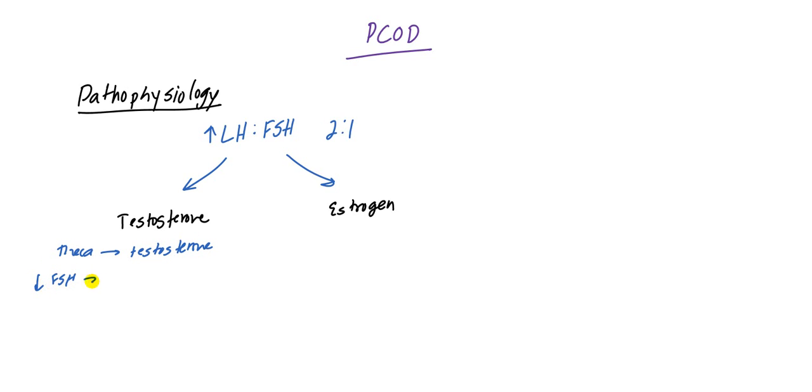Usually the granulosa cells will convert the testosterone into estrogen, but granulosa cells are activated by FSH. So if you have low FSH you're going to have decreased granulosa cells, and your testosterone to estrogen conversion is not going to occur. So primarily you are left with a lot of testosterone.